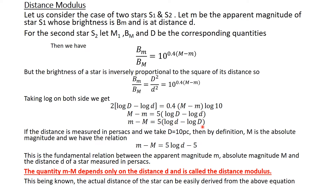Simplifying, we get: m − M = 5 log d − 5 log D. We now replace capital D, the distance of star S2, with 10 parsecs. Then by definition, M is the absolute magnitude, so the relation becomes: m − M = 5 log d − 5. This is the fundamental relation between apparent magnitude m, absolute magnitude M, and distance d of a star.